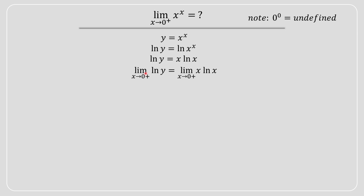We then take the limit as x approaches 0 from the positive side on both sides of the equation and try to solve the right-hand side. To apply L'Hôpital's rule we need a fraction, so I like to rewrite x·ln(x) as ln(x) in the numerator and 1/x in the denominator — these are equivalent expressions, and this form makes it very lovely to solve.